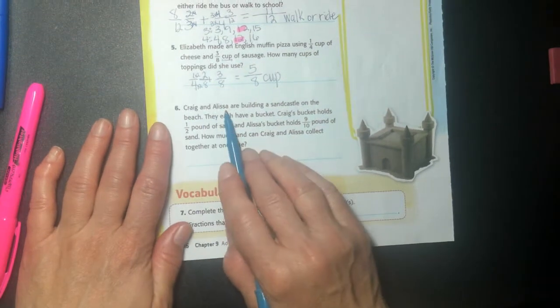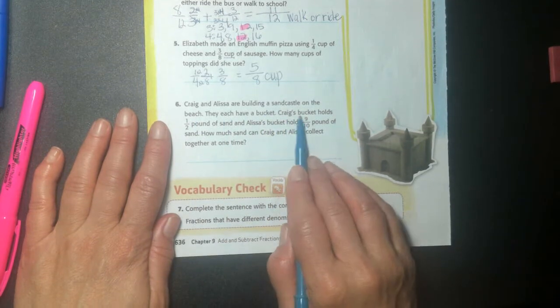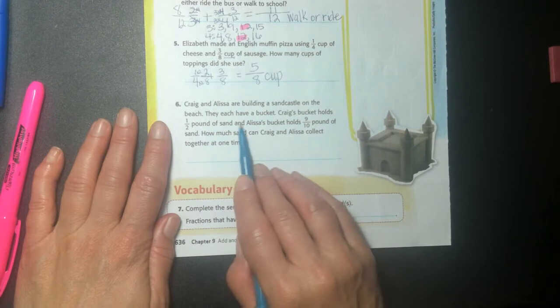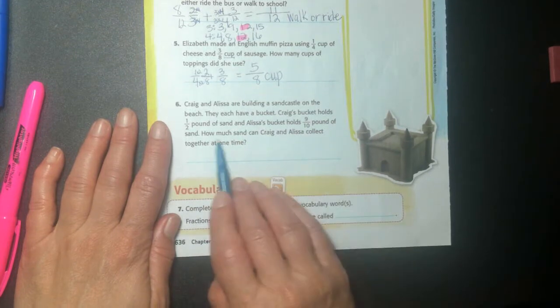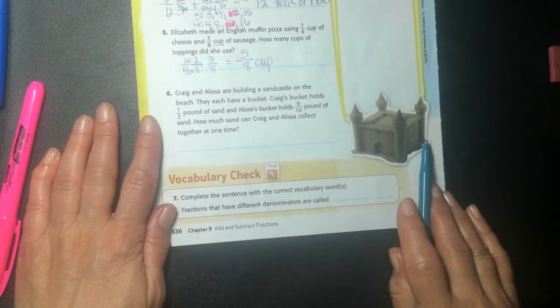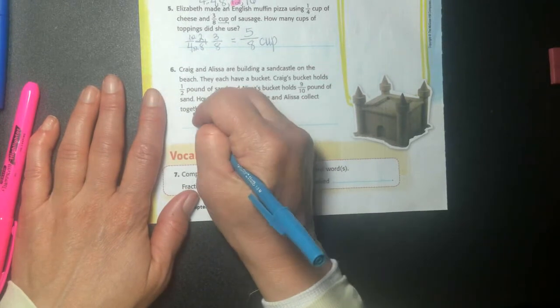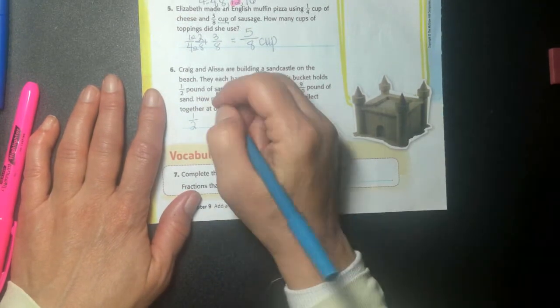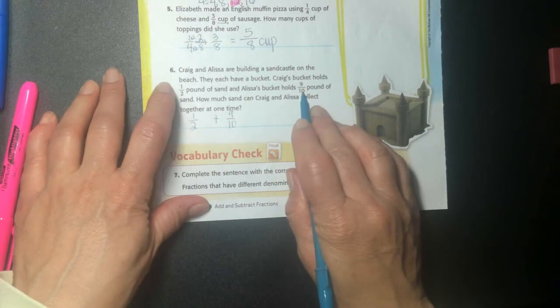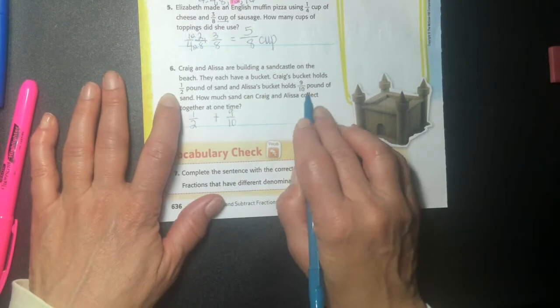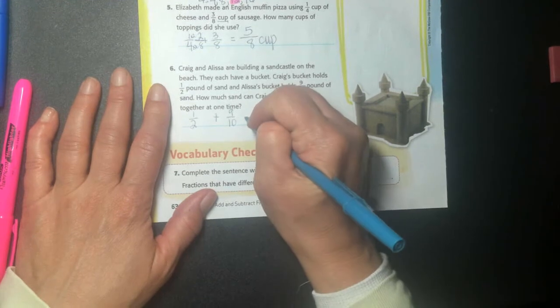And here's Craig and Alyssa are building a sandcastle on the beach. They each have a bucket. Craig's bucket holds one half pound of sand and Alyssa's bucket holds nine tenths of a pound of sand. How much sand can Craig and Alyssa collect together at one time? So there's the sandcastle. So if they both go down and collect sand and bring it back, how much will they have all together? One half a pound and nine tenths of a pound. Right. You can tell that Craig's bucket does not hold as much sand as Alyssa's does, right? She almost has one whole bucket. And he has a half a bucket, half a pound. They have different sized buckets.